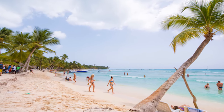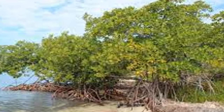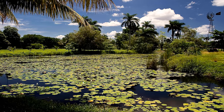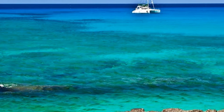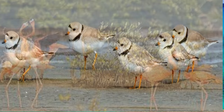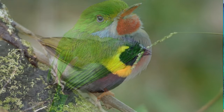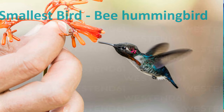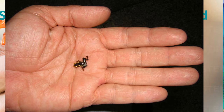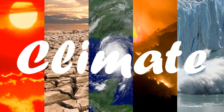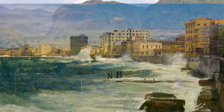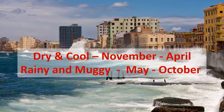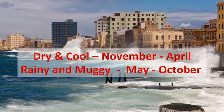The beaches, mangroves and wetlands create a border between the sea and the land. These ecosystems are inhabited by a great variety of animals. Cuba is home to over 25 endemic bird species, including the bee hummingbird, which is the smallest bird in the world. One of the smallest frogs also calls this area home. Climate.